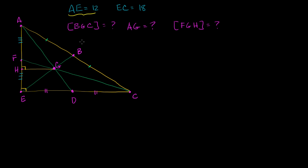The first thing they ask us is: what is the area of triangle BGC? To figure out the area, we remind ourselves that the three medians of a triangle divide it into six triangles that have equal area. So if we know the area of the entire triangle, we can find the answer.